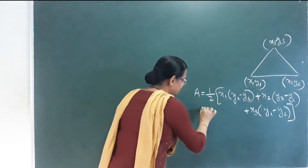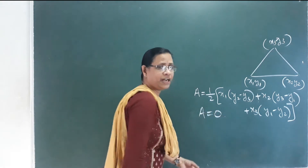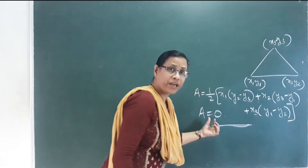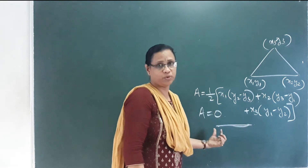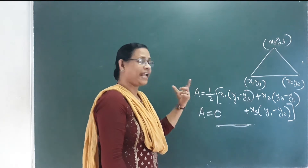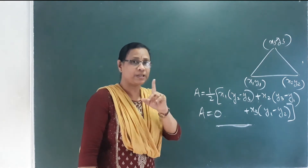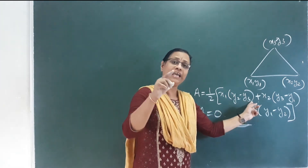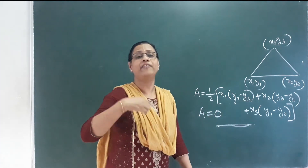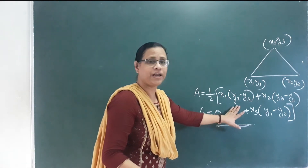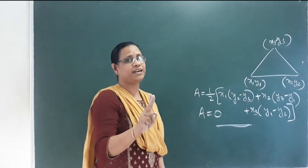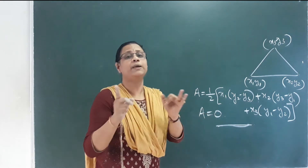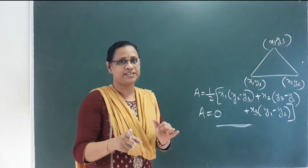In this condition, if these three points are collinear points, this area is always non-negative. If the area is negative, we take the absolute (modulus) value. The main point is that area is always non-negative. If the area is zero, these three points are collinear points.